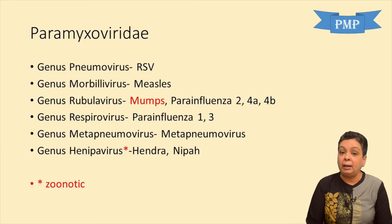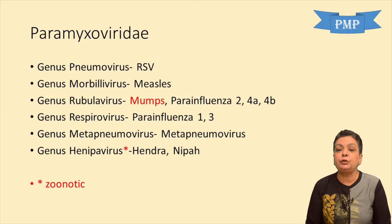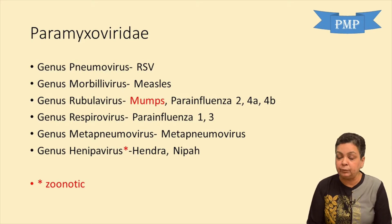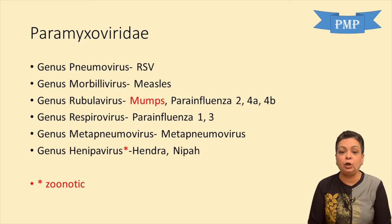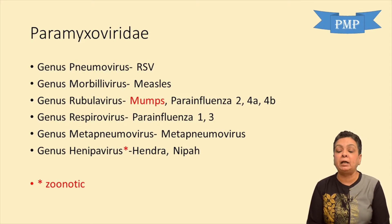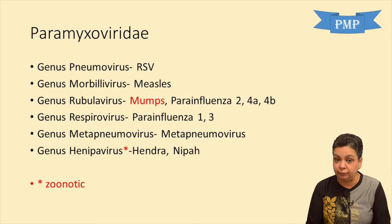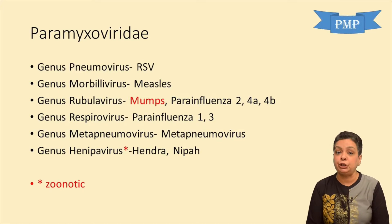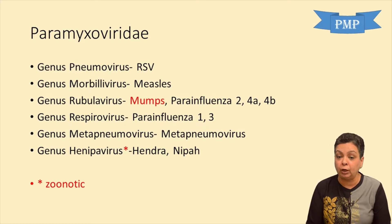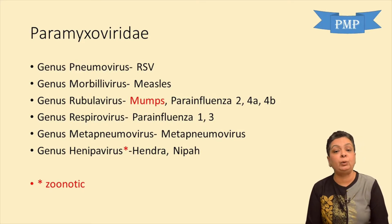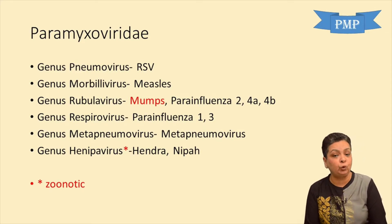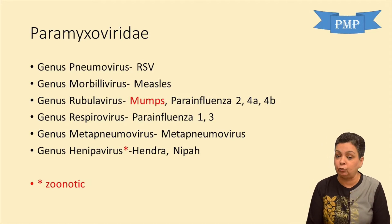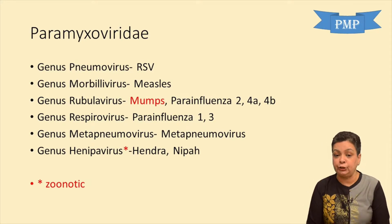Mumps virus belongs to the same family as measles, that is Paramyxoviridae, and mumps belongs to the genus Rubula virus. Parainfluenza 2 and 4a and 4b also belong to the same genus.